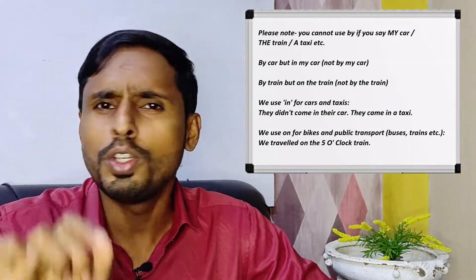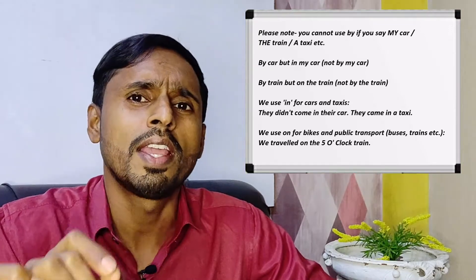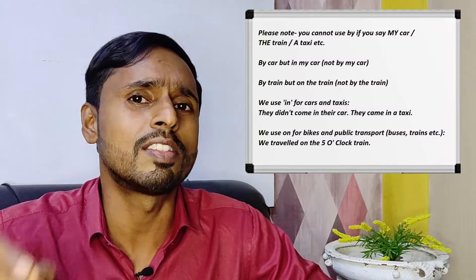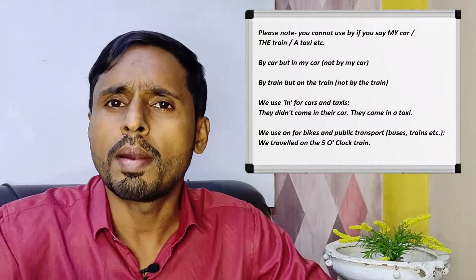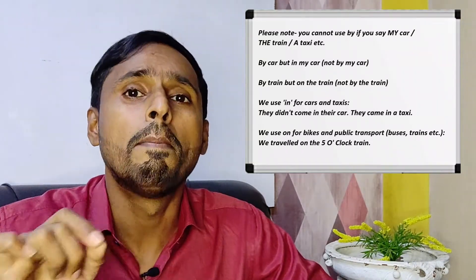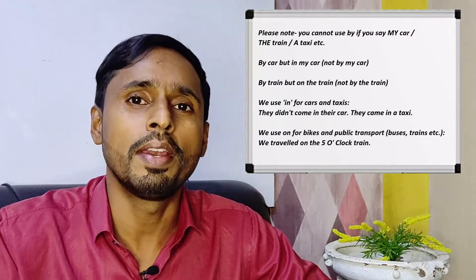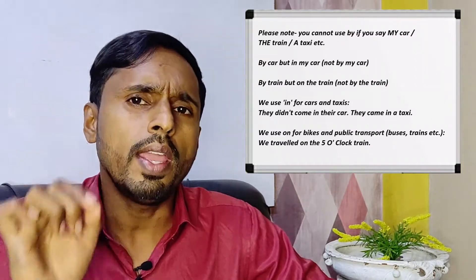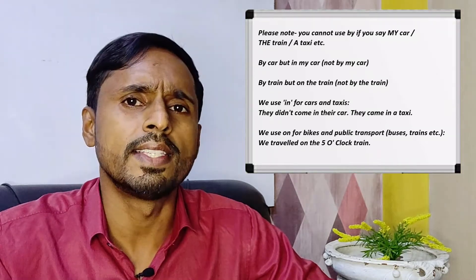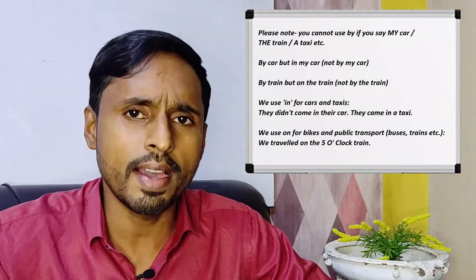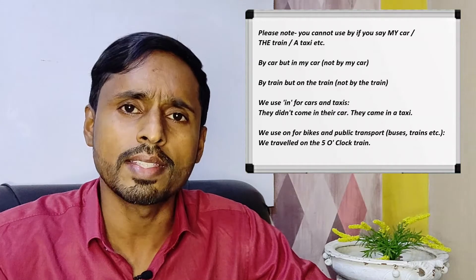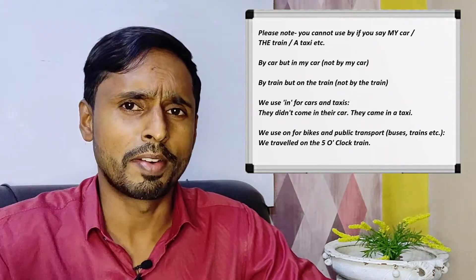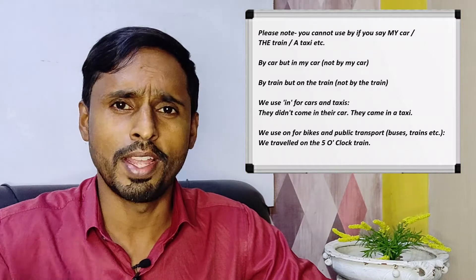Remember, you cannot use 'by' if you say 'my car', 'the train', 'a taxi', etc. We say 'by car', but 'in my car' — not 'by my car'. 'By train', but 'on the train' — not 'by the train'. We use 'in' for cars and taxis: they didn't come here in their car, they came in a taxi. We use 'on' for bikes and public transport — buses, trains, etc. We traveled on a five o'clock train.